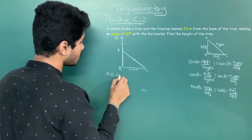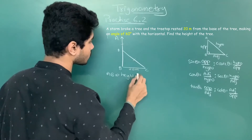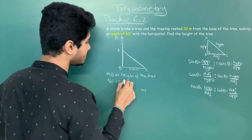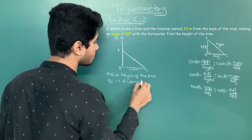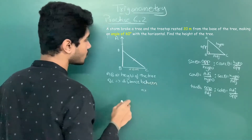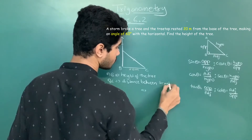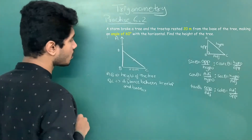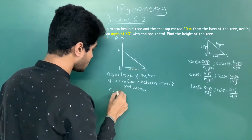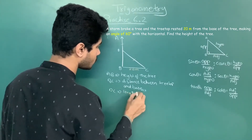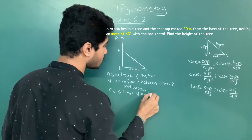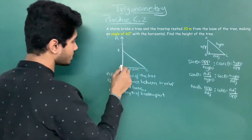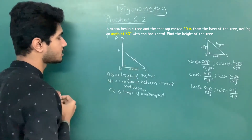We describe the diagram: AB is the height of the tree, BC is the distance between the treetop and the base of the tree. DC is the length of the broken part of the tree. We assume that angle B is 90 degrees — the tree stands vertically.